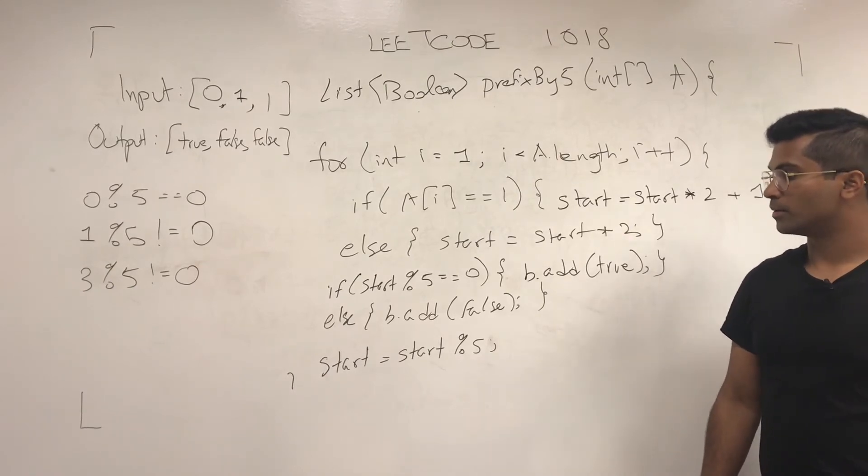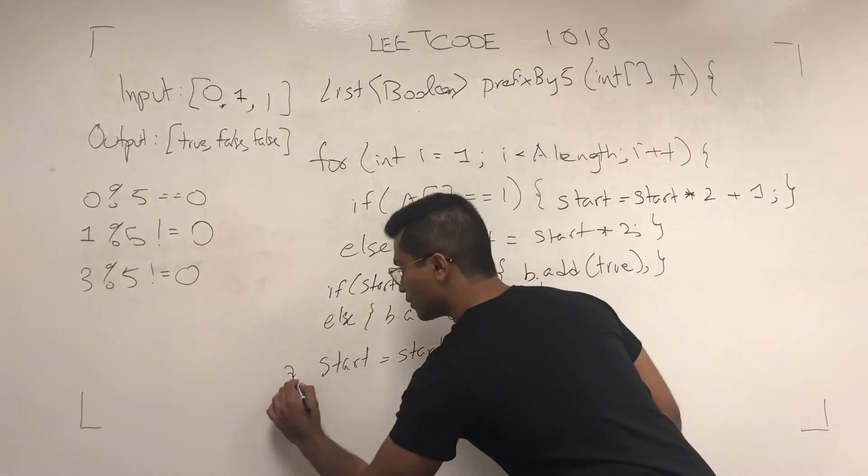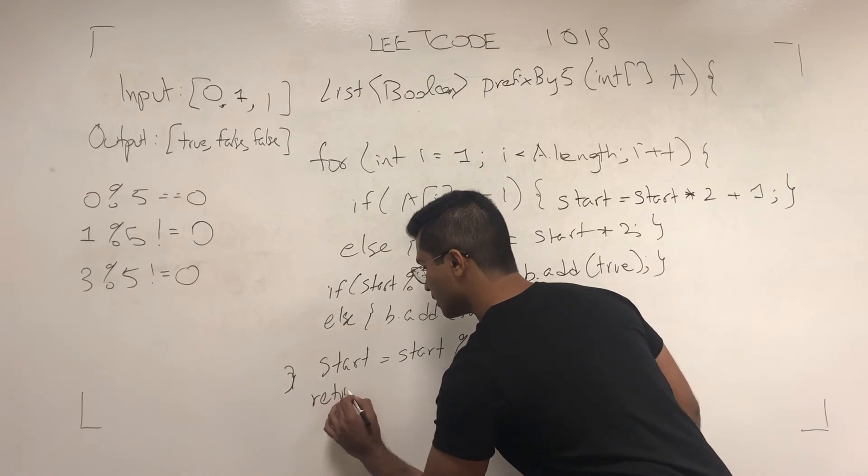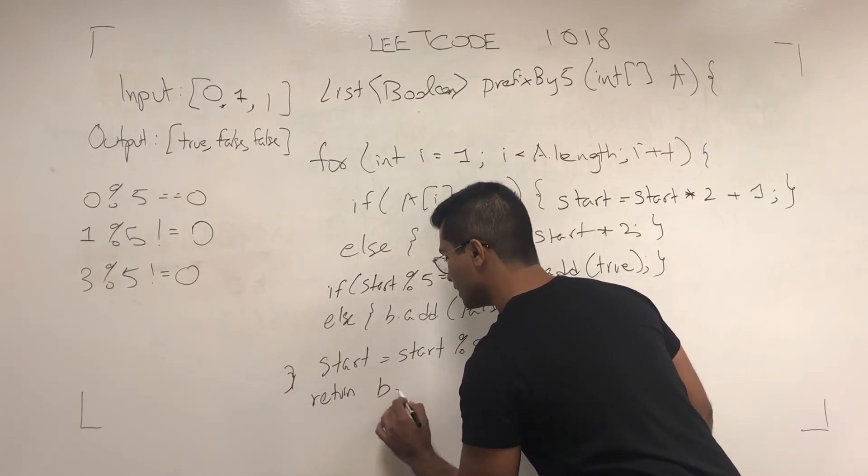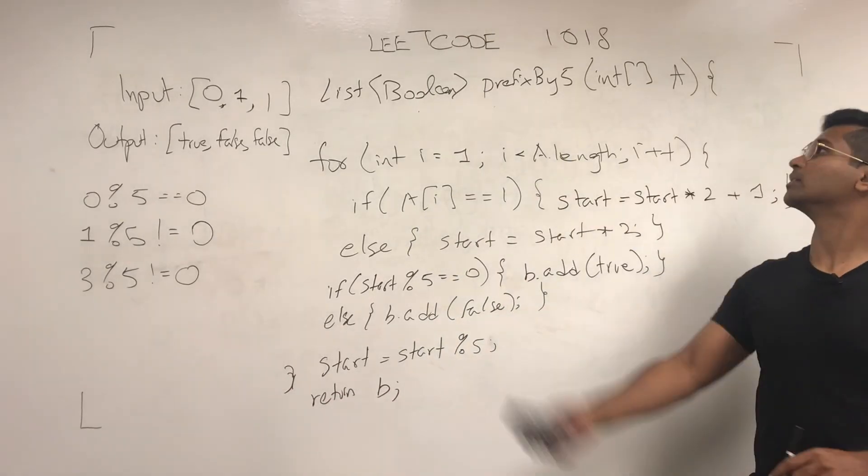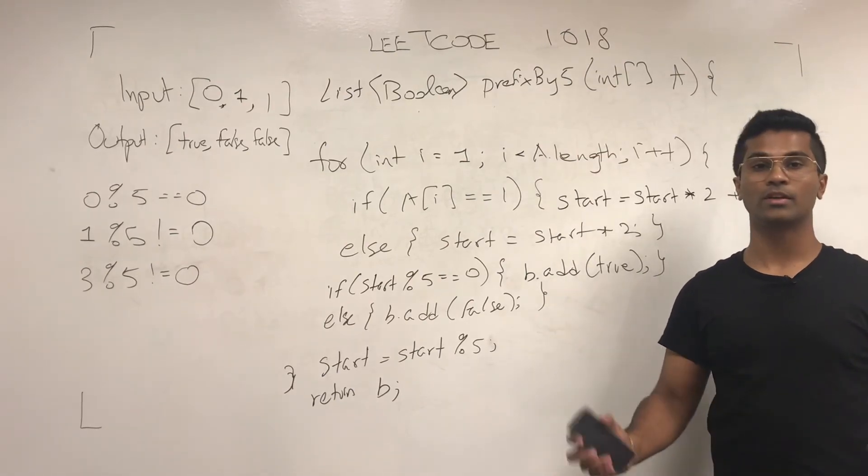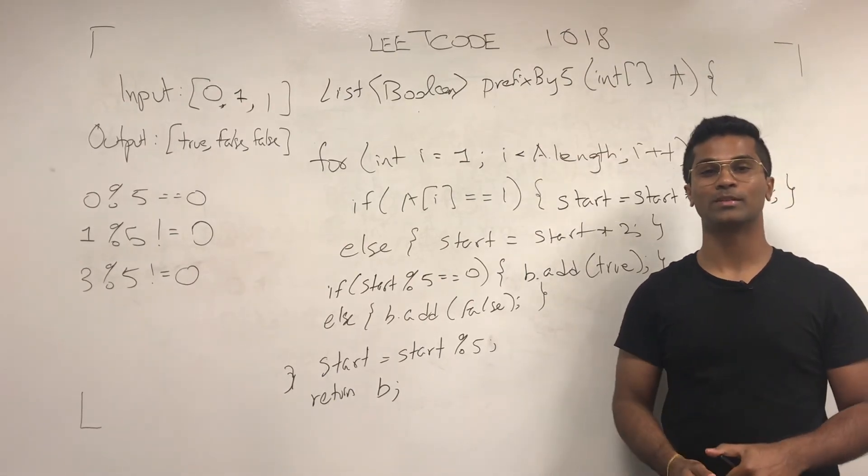And then we, pretty much that's going to be the outer for loop, and then we return b. And there you have it. That's how you solve LeetCode 1018. If you liked the video, please subscribe. It's going to motivate me to make some more.